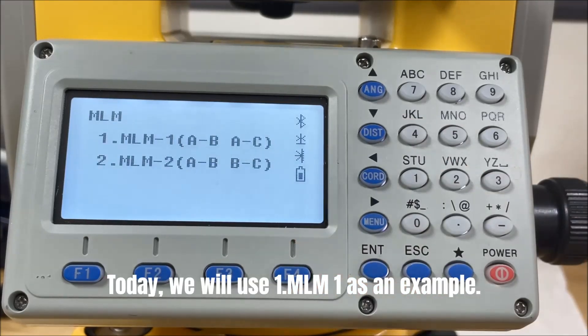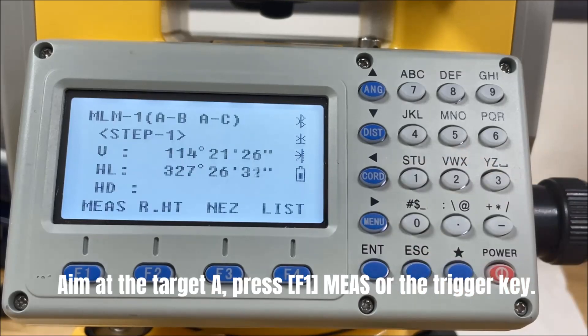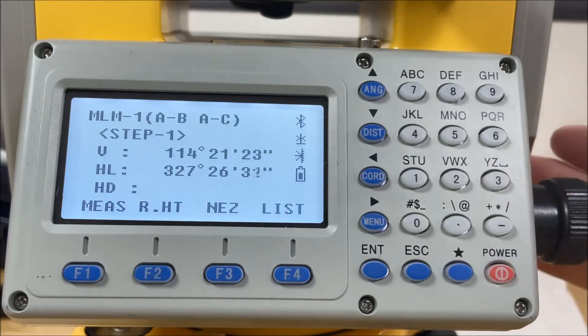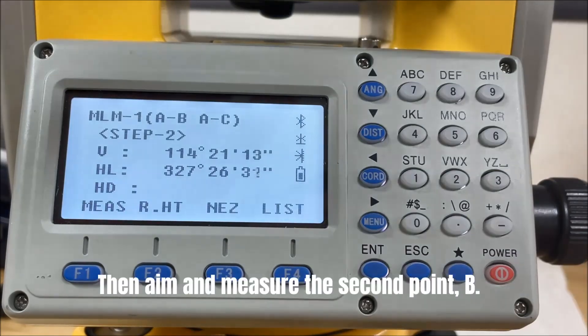Today, we will use MLM1 as an example. Aim at the target A, press F1 measure or the trigger key. Then aim and measure the second point, B.